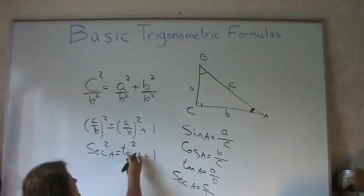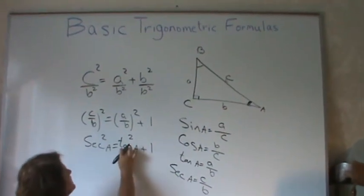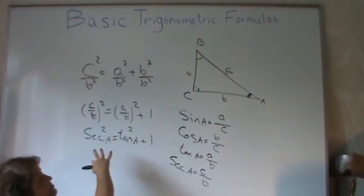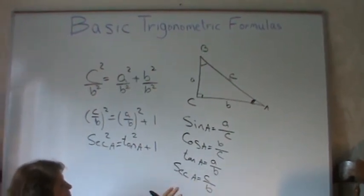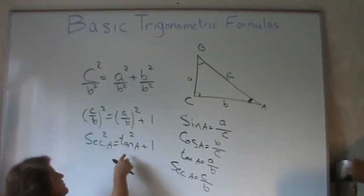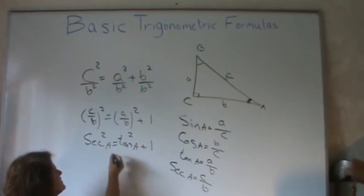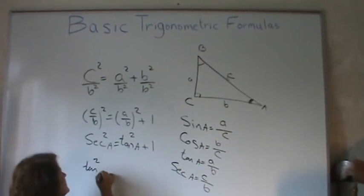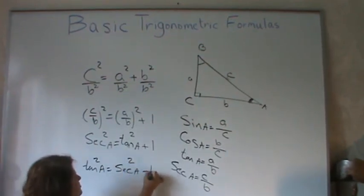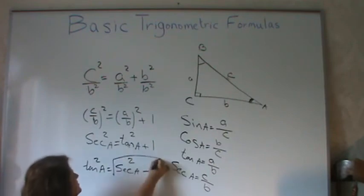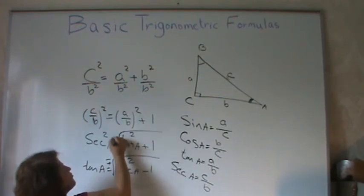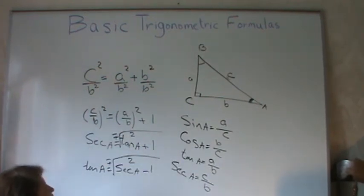From here you can derive a lot of other formulas. You use these especially in physics or in integration in calculus. For example, tangent squared A equals secant squared A minus 1, or you can take the square root: plus or minus tangent equals that, depending on what you need.